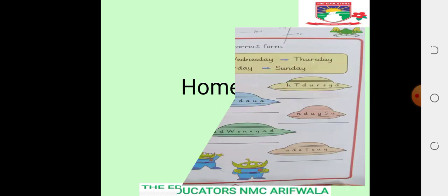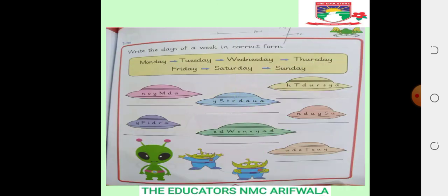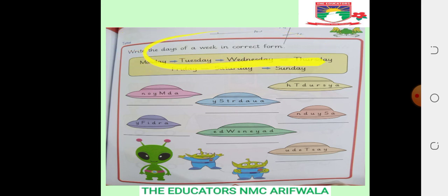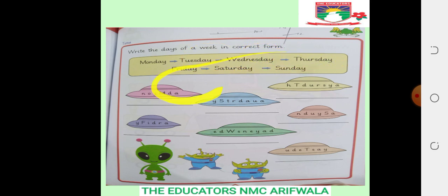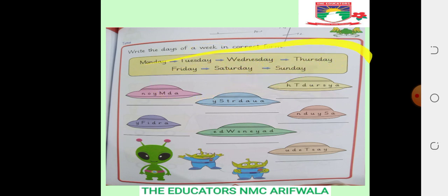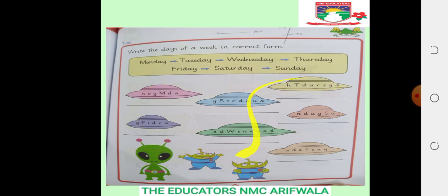Now teacher will tell you about your homework. Your homework is you will solve your page. Write the days of the week in correct form: Monday, Tuesday, Wednesday, Thursday, Friday, Saturday, and Sunday. Here you have the complete spelling and here you have the sequence for your homework.